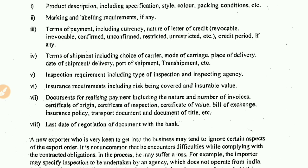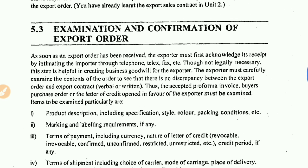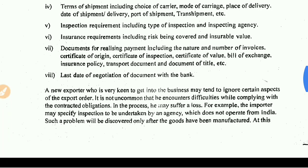The seventh point is documents for realizing payment, including the nature and number of invoices. The documents you need to check include: certificate of origin, certificate of inspection, certificate of value, bills of exchange, insurance policy, transport document, and document of title. These are the things which you need to examine.